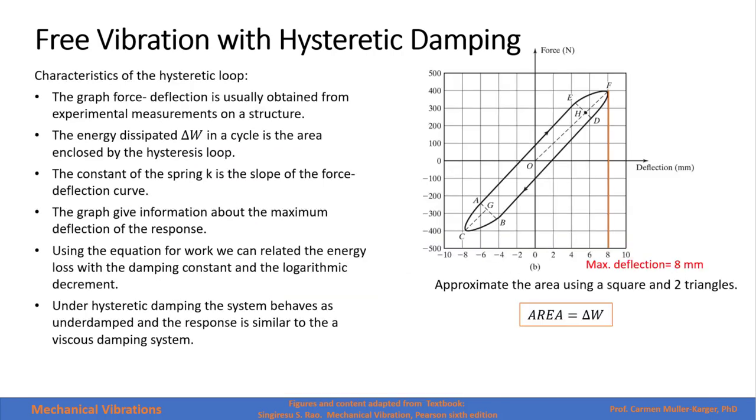The characteristics of the hysteretic loop are the following. The graph force deflection is usually obtained from an experimental measure of the structure. The energy dissipated in each cycle is the area enclosed of the hysteretic loop. You see here this area, you can calculate it, for example, in this graph, as two triangles and a square.